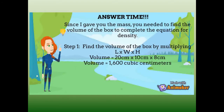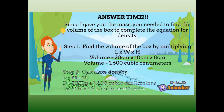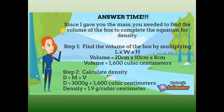It's answer time. Since the mass was given, you needed to find the volume of the box. Your first step was to find the volume by multiplying length times width times height: 20 cm × 10 cm × 8 cm, giving a volume of 1,600 cubic centimeters. Then, density equals 3,000 grams divided by 1,600 cubic centimeters, giving a density of 1.9 grams per cubic centimeter.